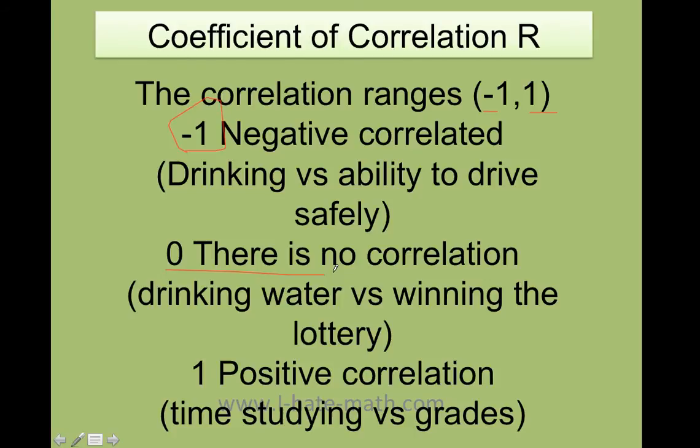If there is no correlation, that means that the R is equal to zero. There's no relationship between the two variables. For example, drinking water and winning the lottery. There's no relationship between those two. Positive correlation is the more you study, the better grades you get. So as you can see here, the coefficient of correlation goes from negative one to one.